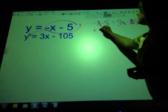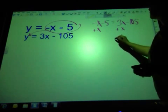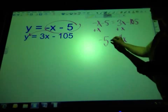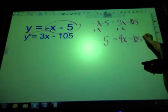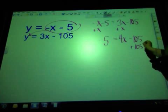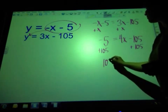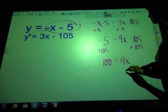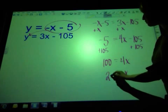So I add x to both sides. I have 4x. And over here I still have a negative 5 and a minus 105. Add my 105. So now I have 100 equals 4x, or x equals 25.